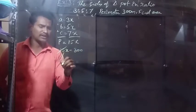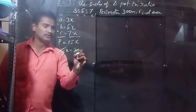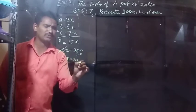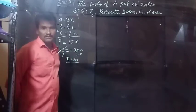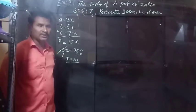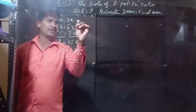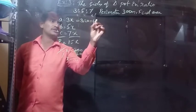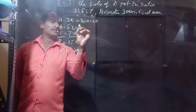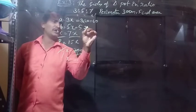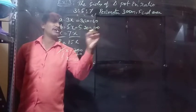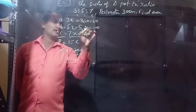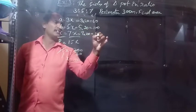We cancel and solve: x = 20. So the sides of the triangle are: 3×20 = 60, 5×20 = 100, and 7×20 = 140.